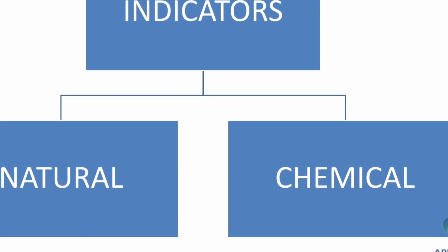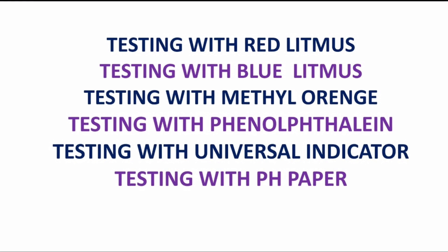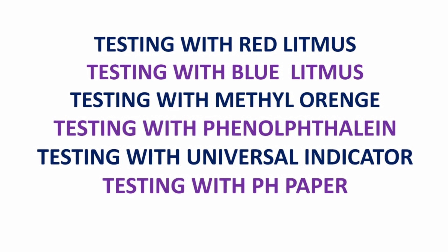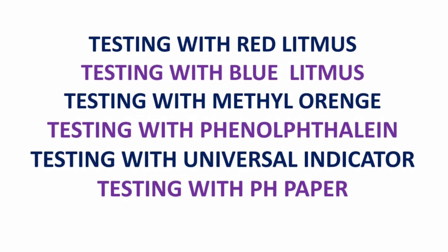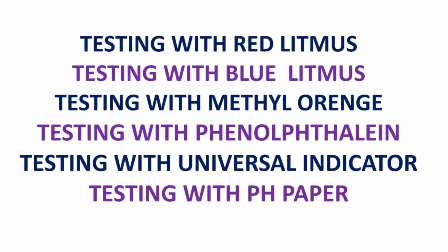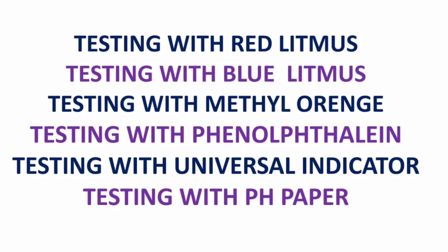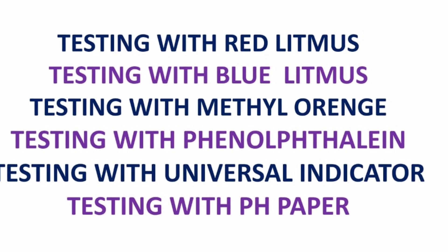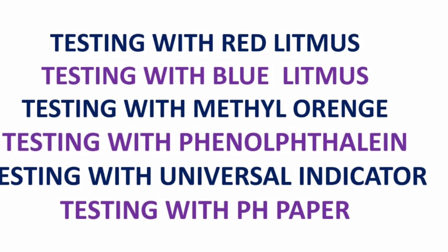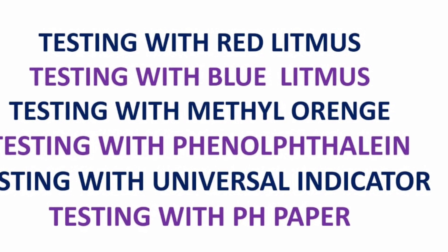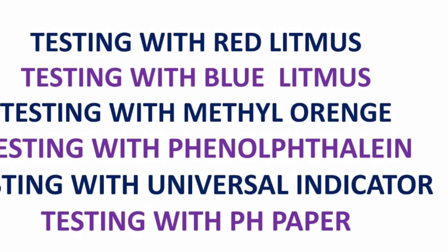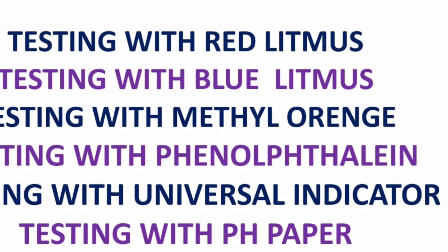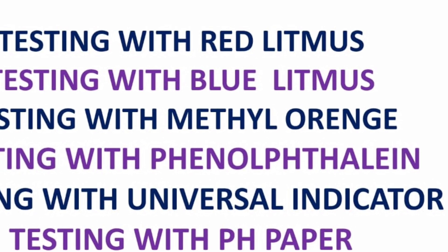We already discussed natural indicators in the previous session. Now let us identify whether the given substance is an acid, base, or neutral using the following activities: testing with red litmus, blue litmus, methyl orange, phenolphthalein, universal indicator, and pH paper.